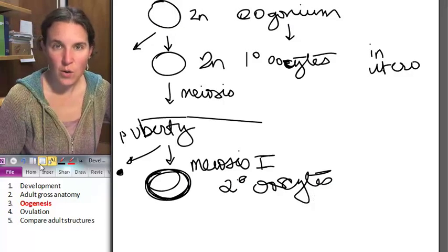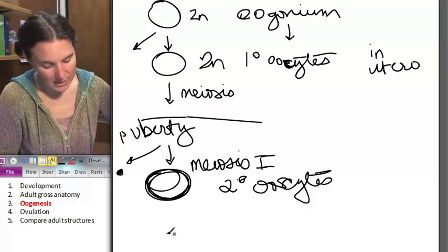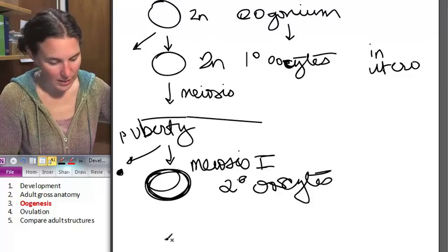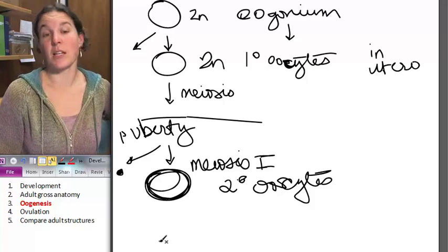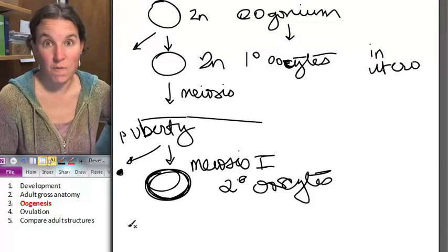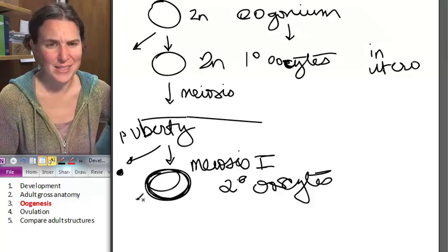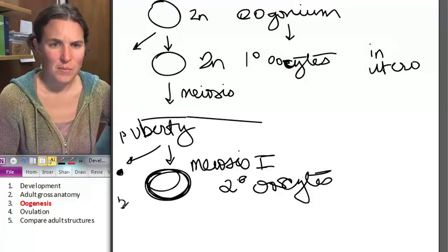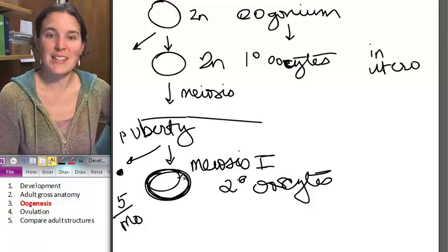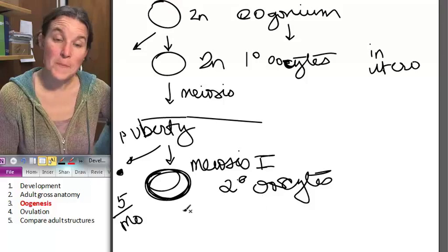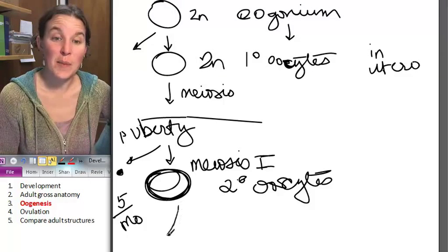Are you ready for this fantasticness? The secondary oocyte, basically the secondary oocytes are going to go through, it's basically a race, a race to the finish. You're going to have six a month, let's just say five per month, that are now secondary oocytes.